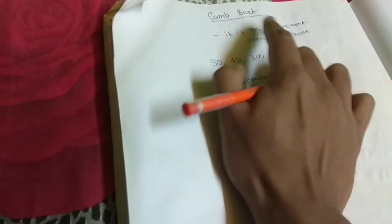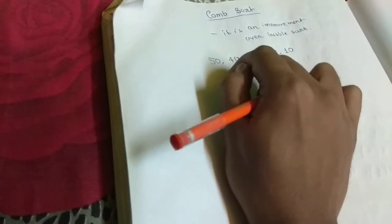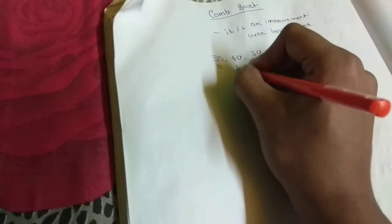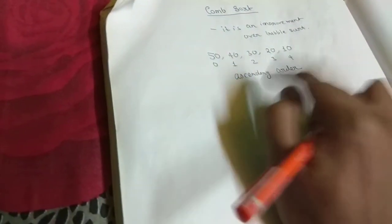What we do in Bubble Sort is that we compare adjacent numbers. But in Comb Sort, there is another factor we need to consider, and this is known as gap. Before discussing gap, let me first mark the indices of these numbers: position 0, 1, 2, 3, and 4. So we have 5 numbers from index 0 to index 4. Gap is a factor by which we are going to compare two numbers, and this gap is basically the advantage of Comb Sort over traditional Bubble Sort.